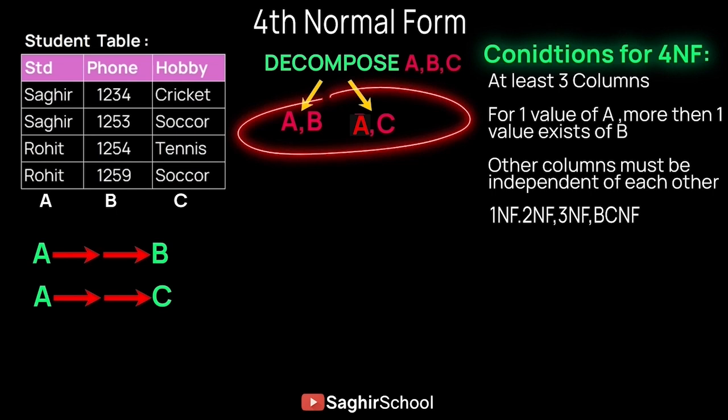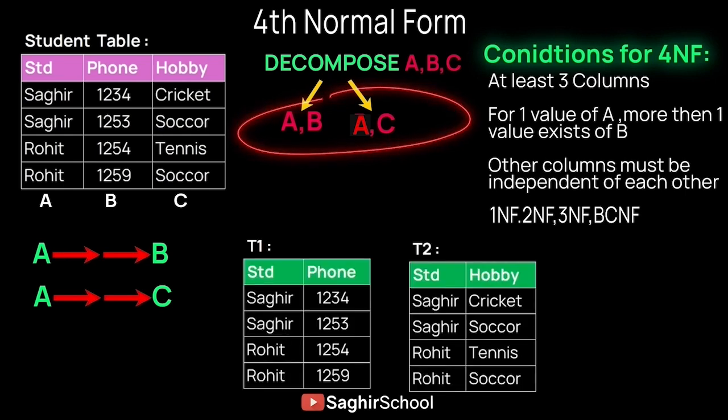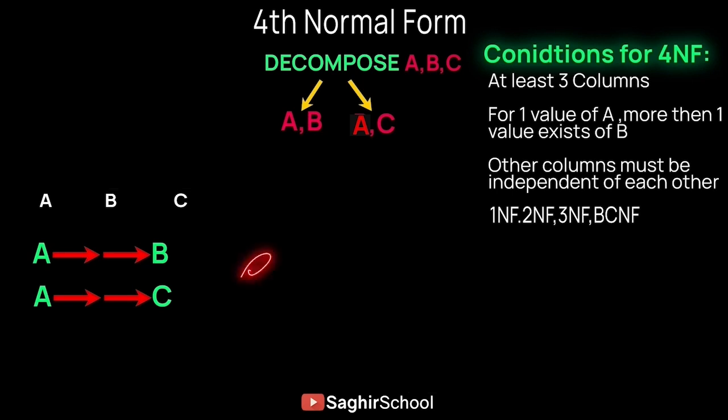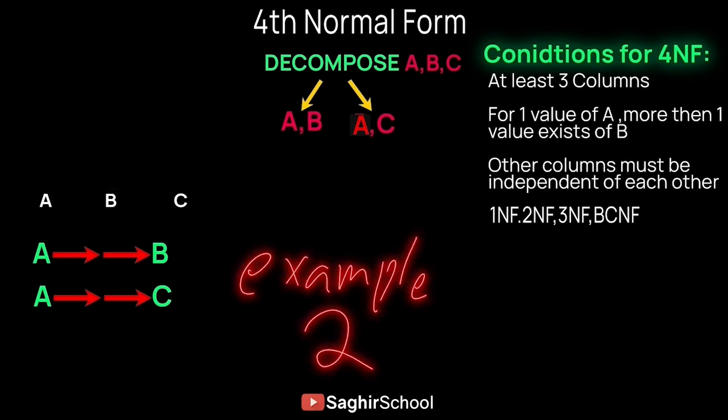To achieve Fourth Normal Form, we decompose the table. The rule for decomposition is to split the table into two: keep the non-multi-valued attribute in the first column of each table, and the other column is filled by each multi-valued attribute — phone number in one table and hobby in the other. Now we have achieved Fourth Normal Form.